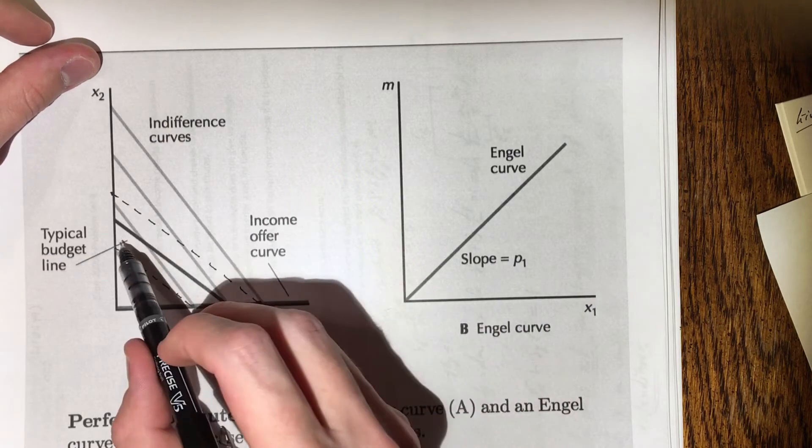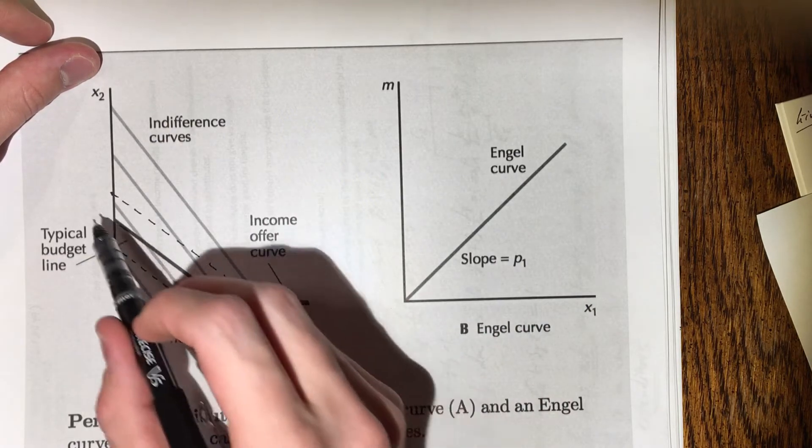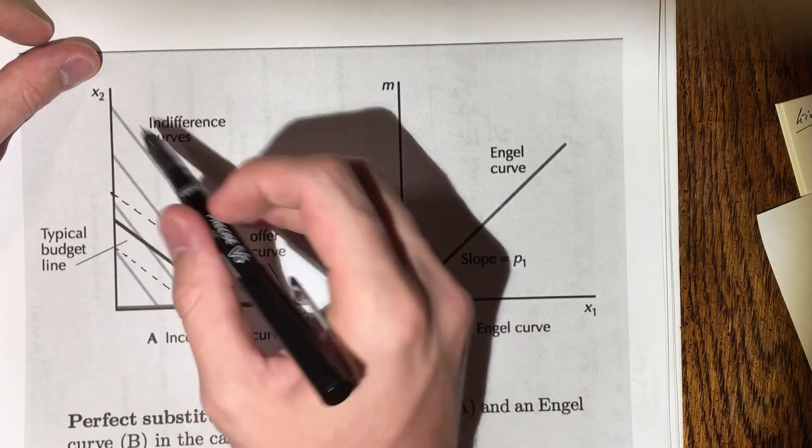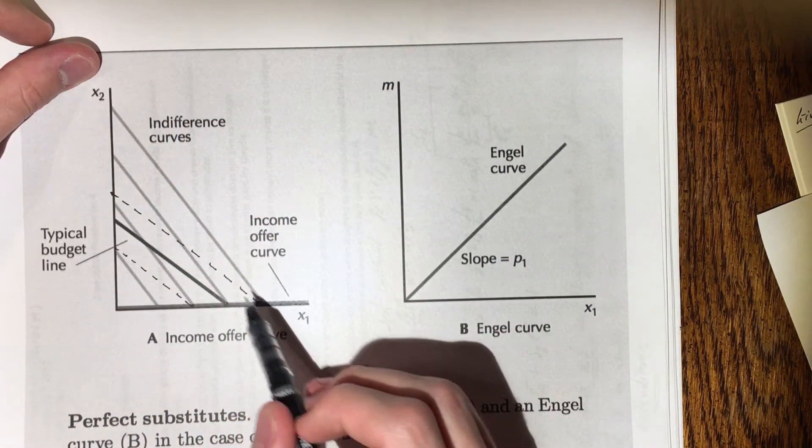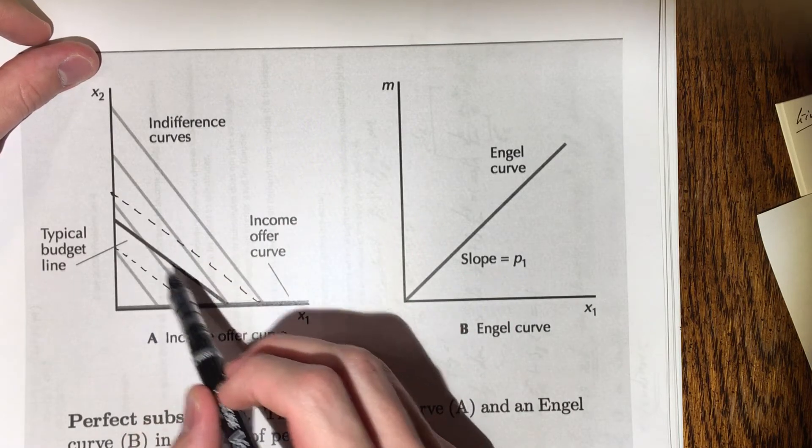We have here a typical budget line drawn in, and we have our indifference curves on the graph. I've added two of my own budget lines to explain what's going on.